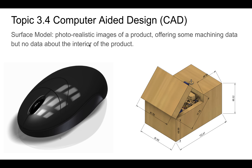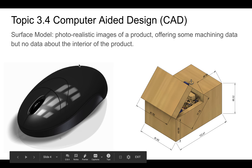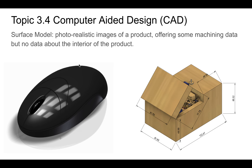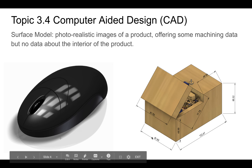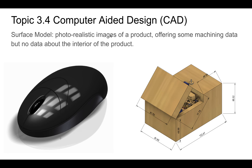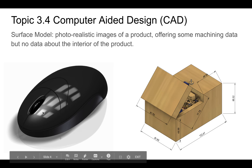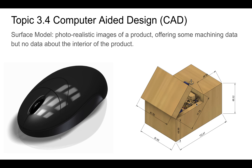These are definitions you need to learn. A surface model is a realistic image of a product made with a computer — it's designed on a computer, it's not a real object but looks like one. Surface basically means there might be some machining data, like dimensions in millimeters, but there's no data about the interior of the product. We don't know anything about the inside of the object.